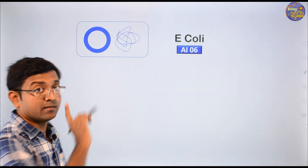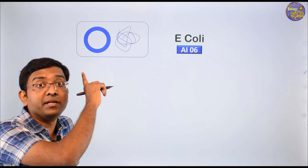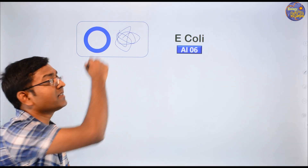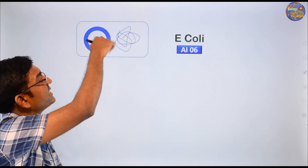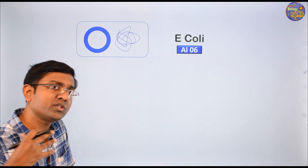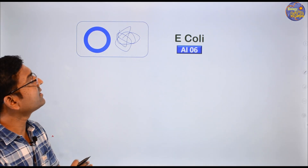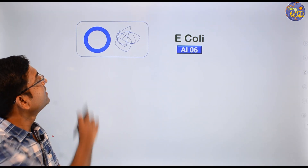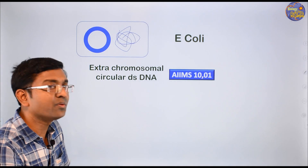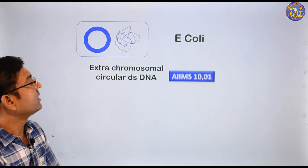Researchers tried to integrate foreign DNA into the plasmid DNA. They saw that when they integrated the DNA, the plasmid would also multiply. Plasmid is an extra-chromosomal circular double-stranded DNA — this is an important definition for exams.